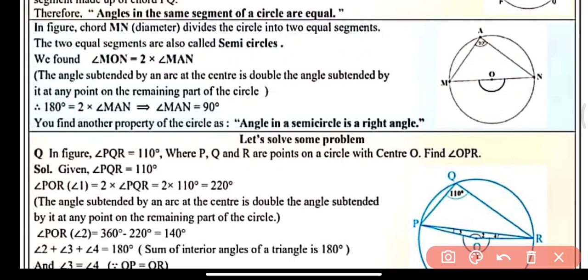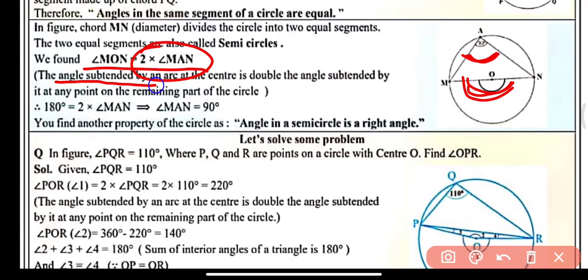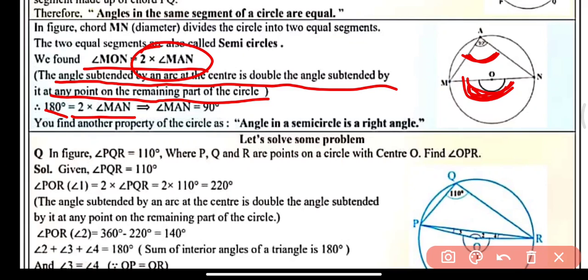So here angle MON at the center is double of the angle at any other point on the circle, so angle MON will be twice of angle MAN. Now MN is a straight line, so angle MON will be 180 degrees. Therefore 180 equals twice of MAN, and MAN will be 90 degrees. So we can say the angle in a semi-circle is a right angle — keep in mind, this is result number 2.